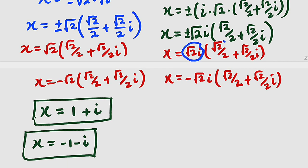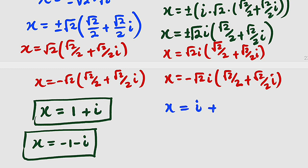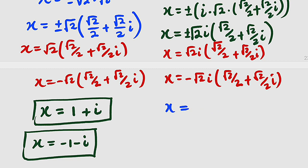Taking root 2i and multiplying by root 2 over 2, you are going to obtain 1, but because of that i we have i. Moving to the next term: root 2i multiplied by root 2 over 2 gives 1, so we have i times i, which is i squared, and i squared is negative 1. Therefore we have negative 1 here. Writing it in standard form — real part before imaginary — gives us x equals negative 1 plus i.